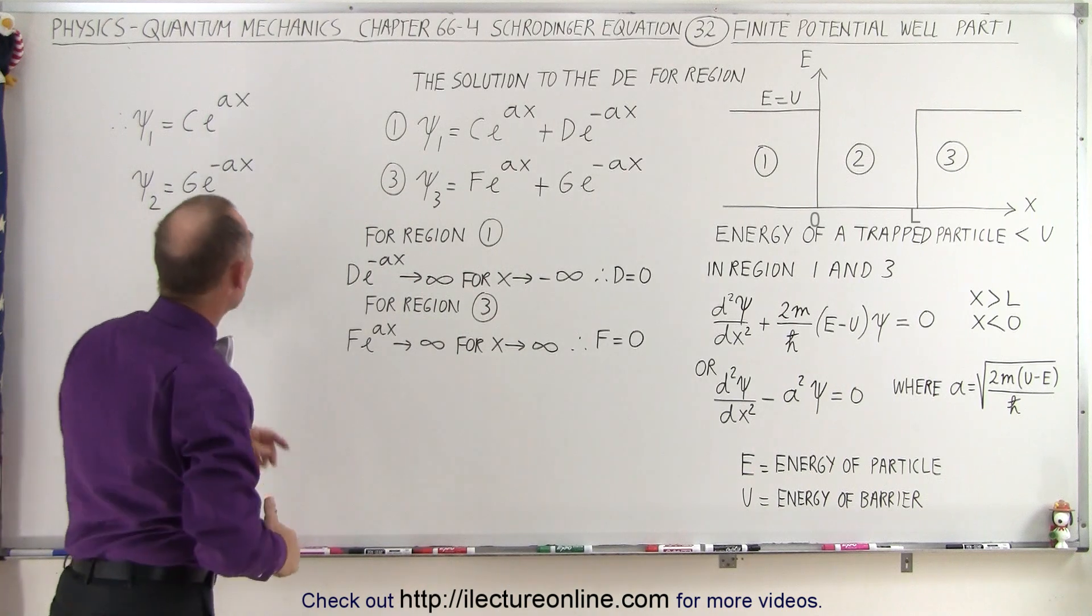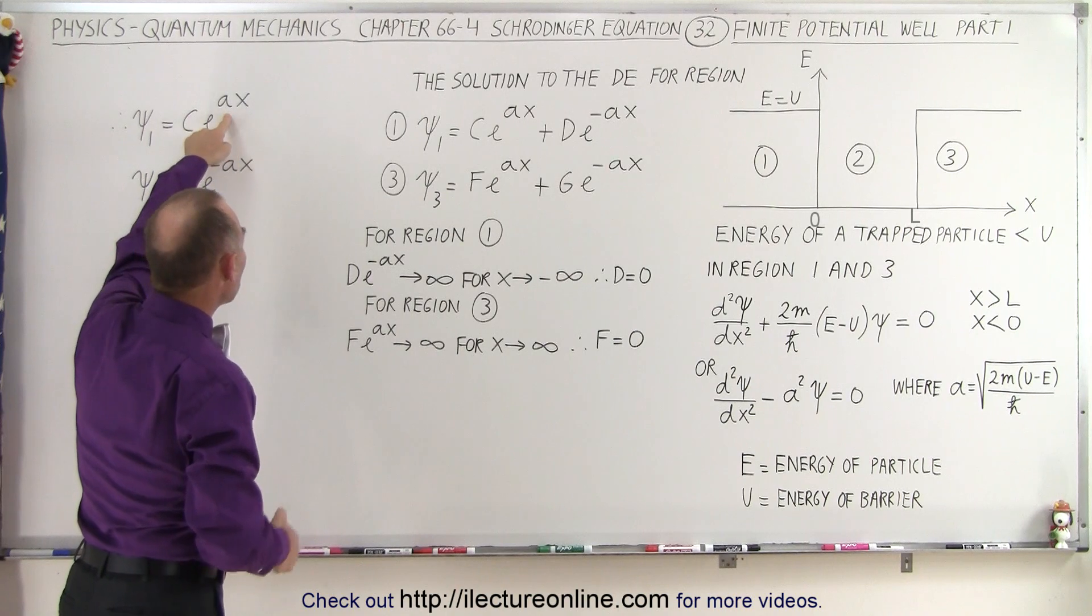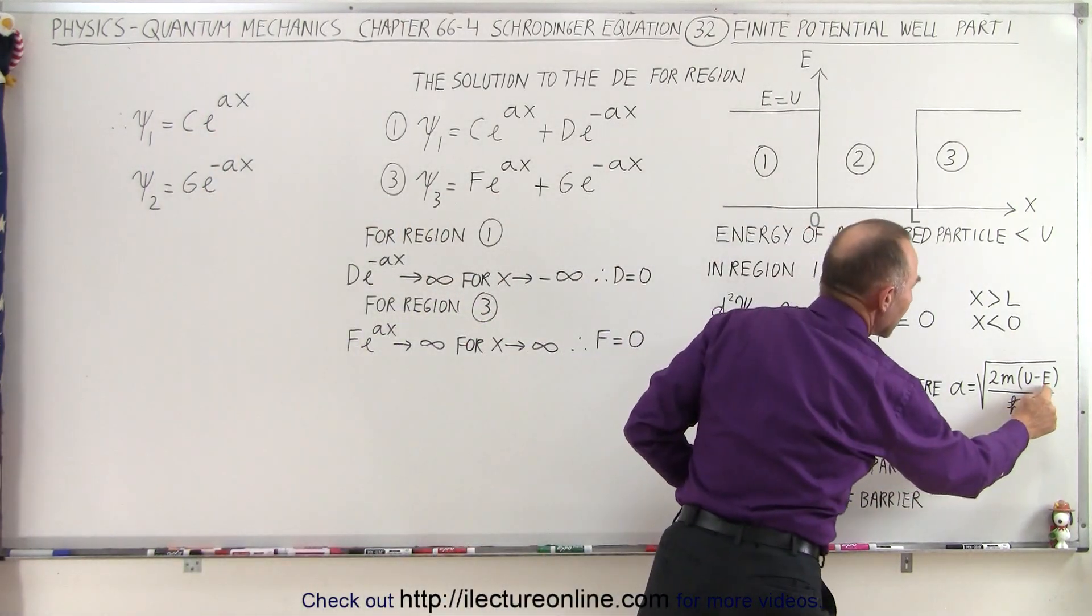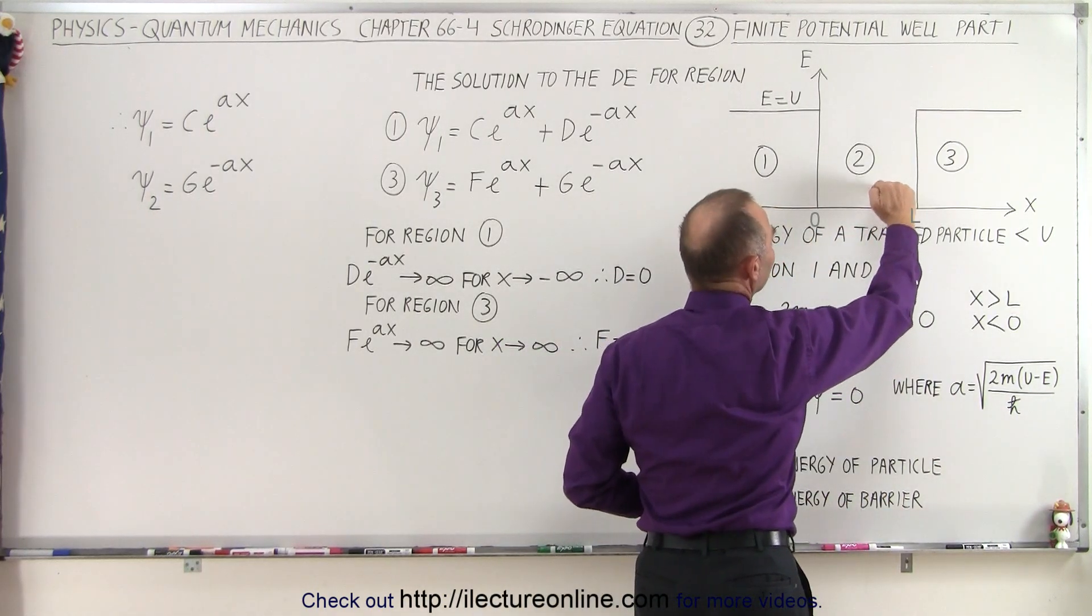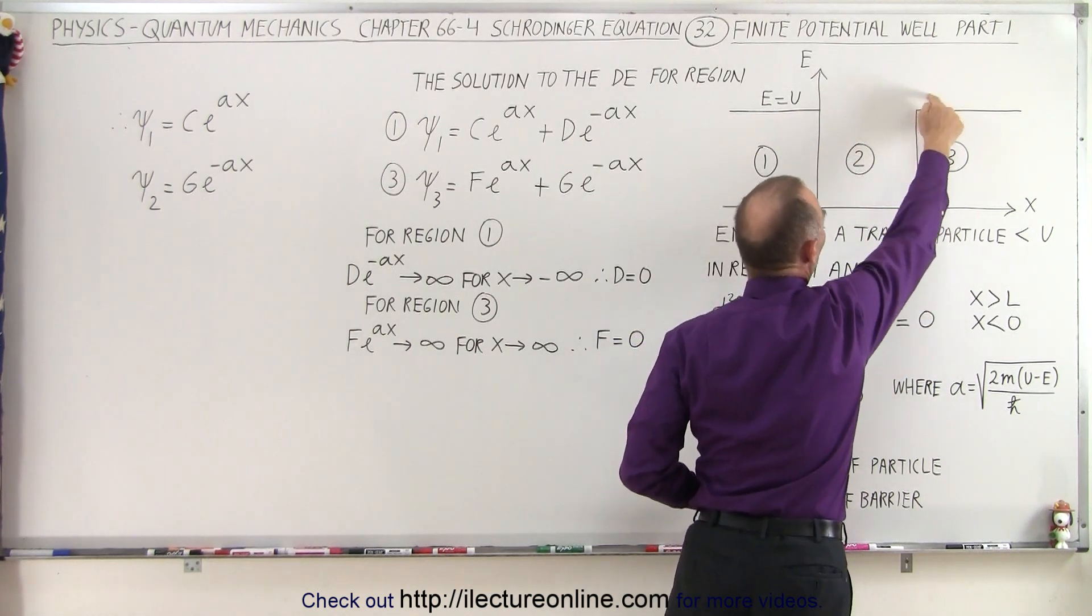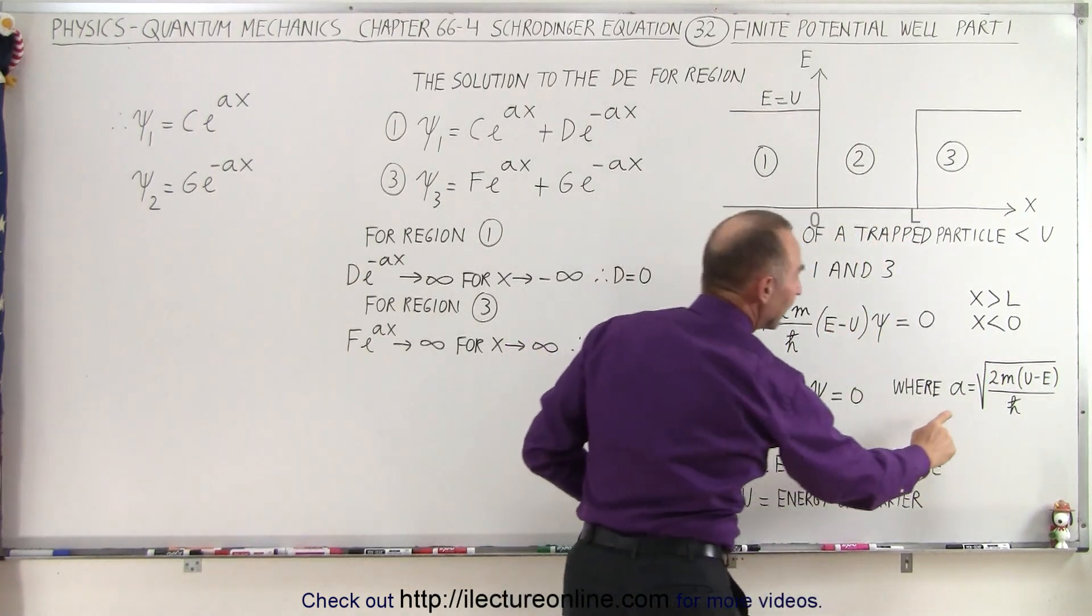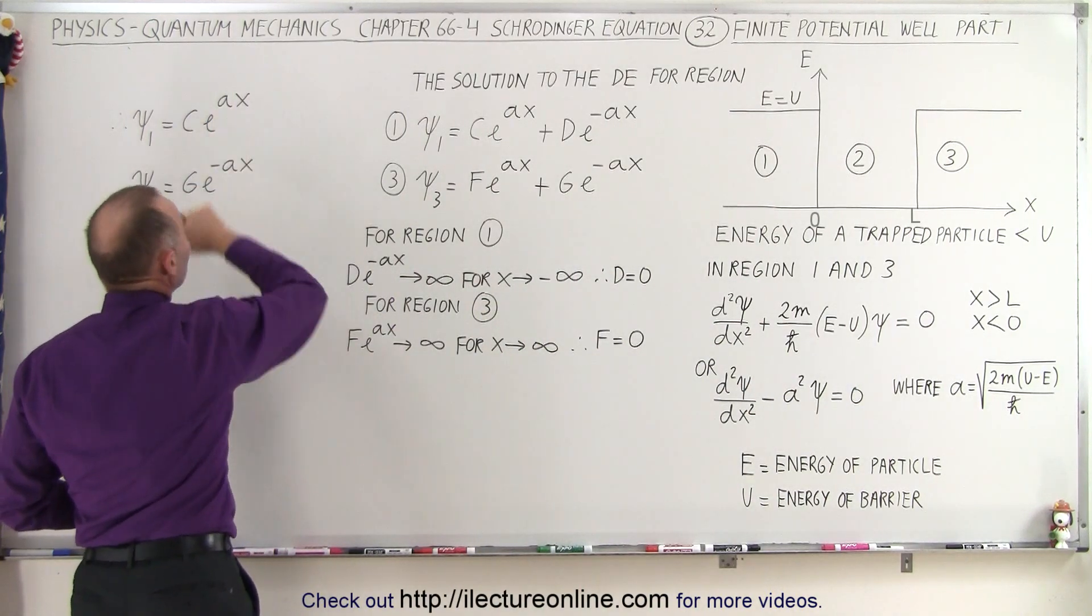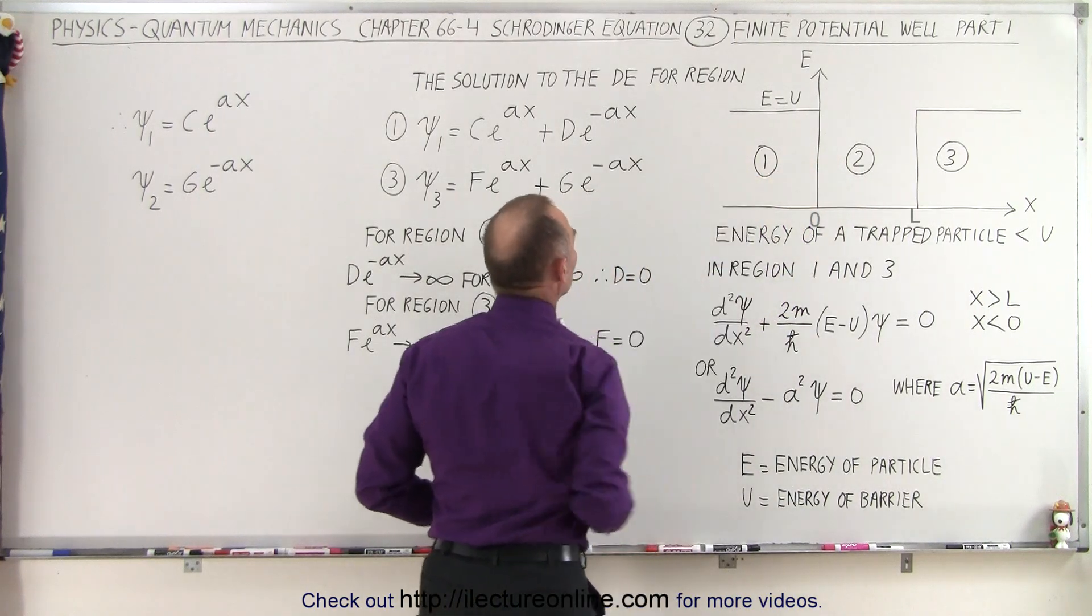which means we have a solution for region 1 in general, that is c e to the ax. a will be determined depending upon the value of e. e is the energy of the particle. The larger the value of e becomes, the closer e has enough energy to get out of the barrier, to get over the barrier, so when u minus e becomes a very small number, then a will become a small number, and if a becomes a small number, that means that in region 1, we can go, the particle could potentially go farther into the region.